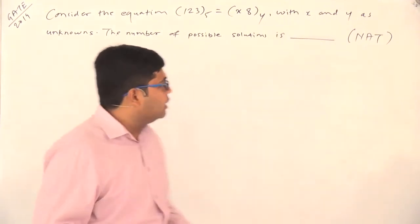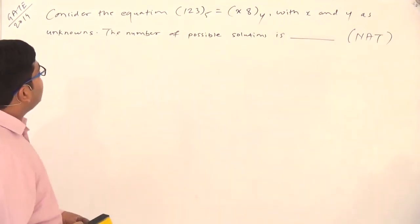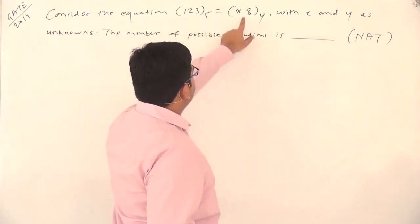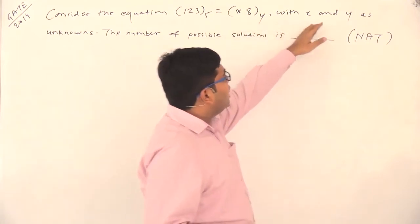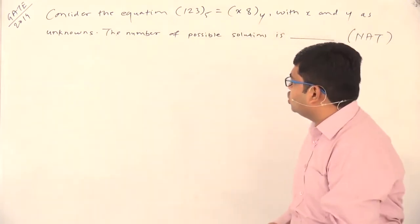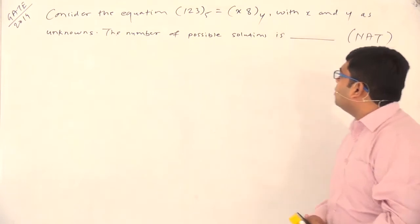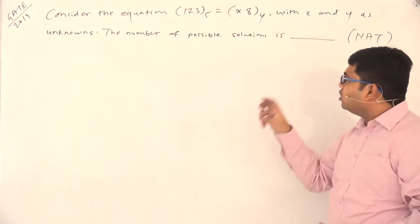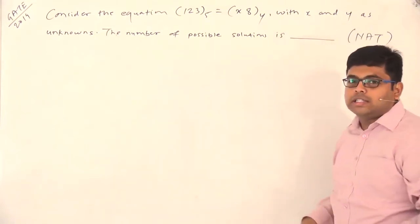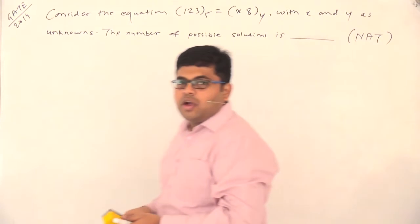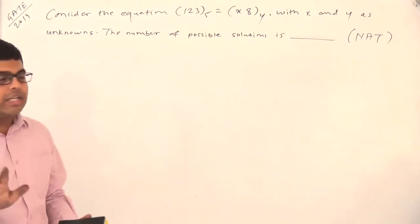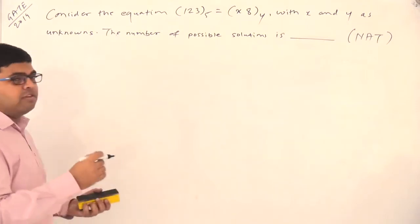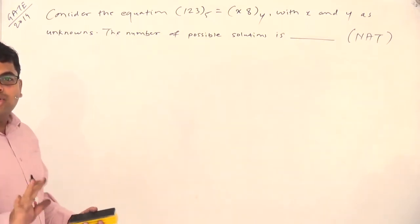From GATE 2014, consider the equation 123 in base 5 equal to x8 in base y, where x and y are unknowns. The number of possible solutions is asked — count the valid values for x and y. It's a numerical answer type question. As I've said many times, the question can always be solved with the expansion method.